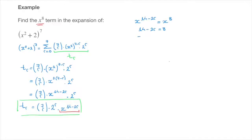This leads to negative 2r equals 8 minus 14, that's negative 2r equals negative 6. Dividing both sides by negative 2 leads to r equals negative 6 over negative 2, so r is equal to 3.